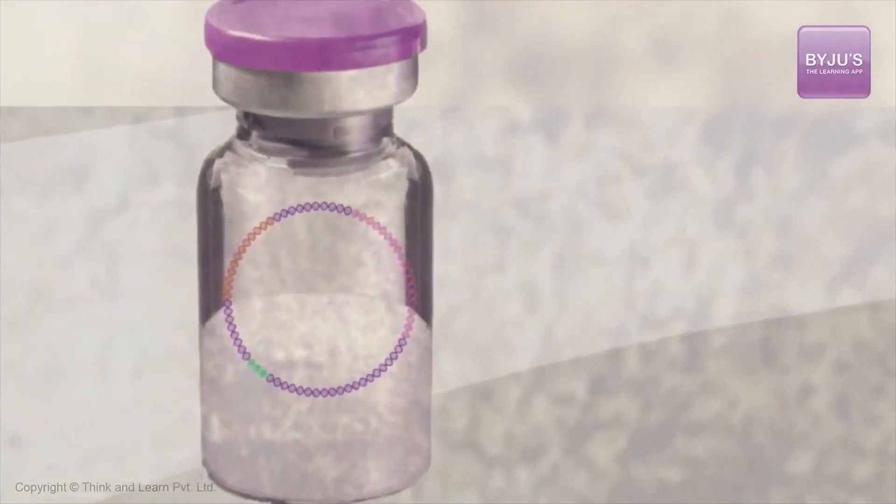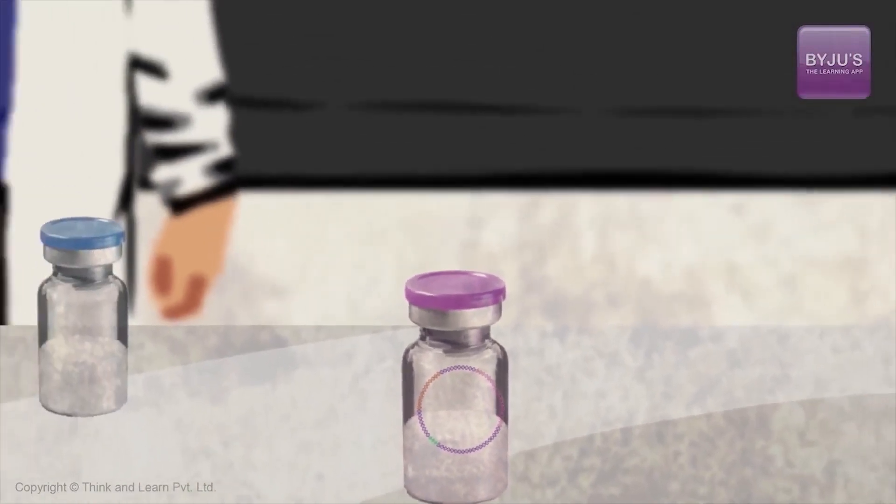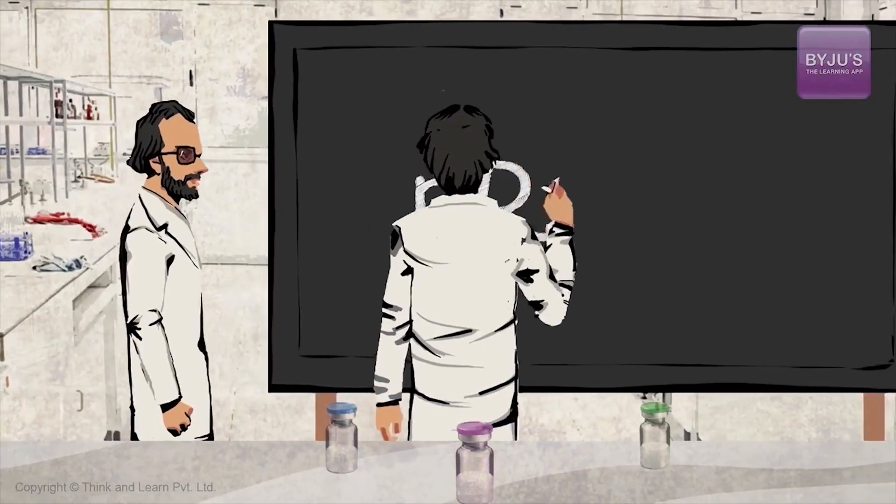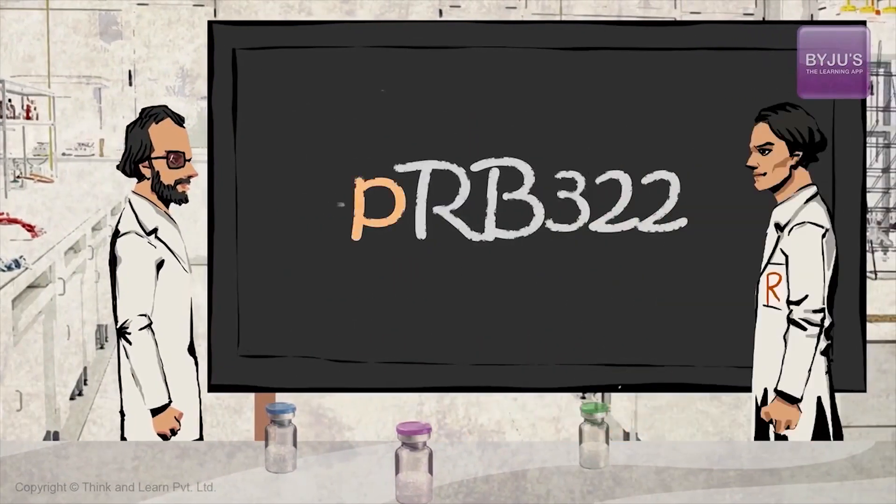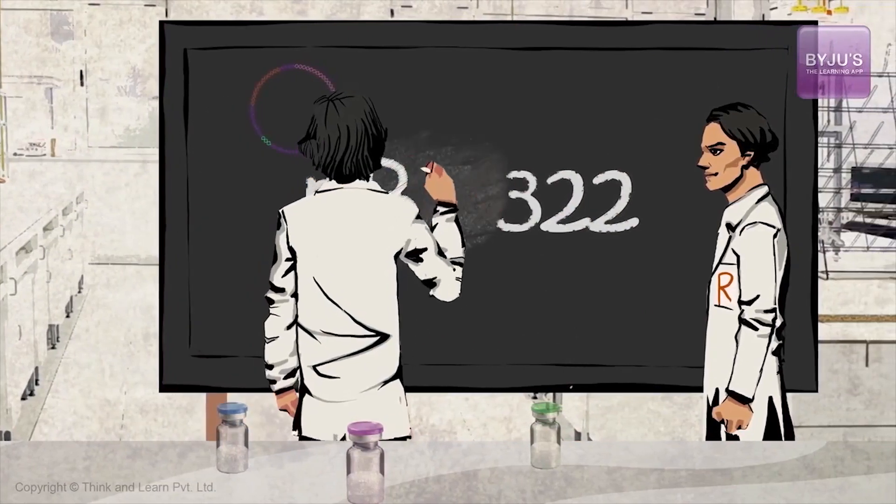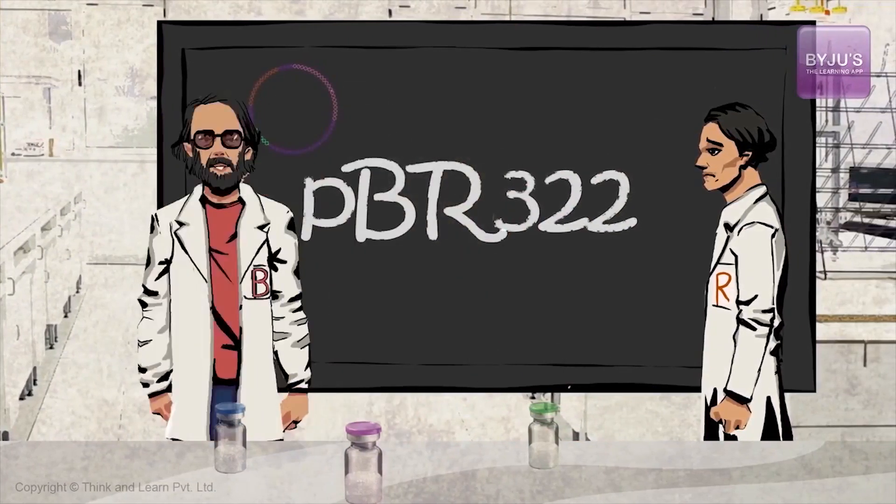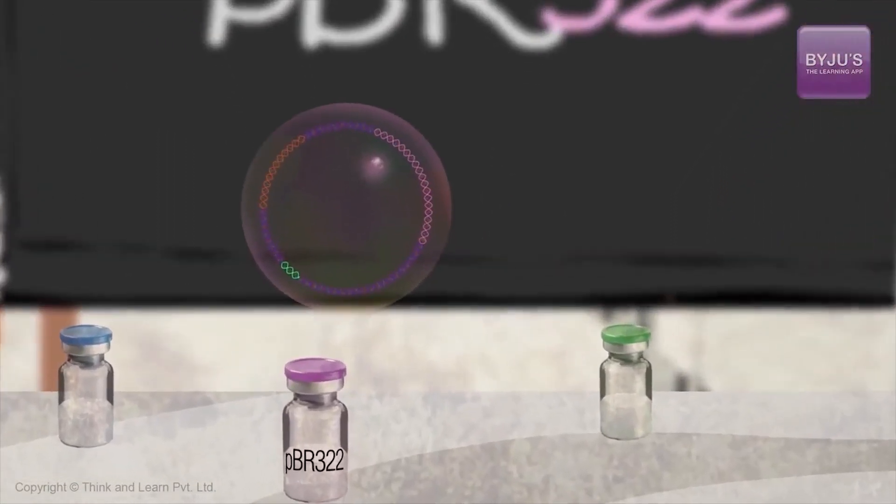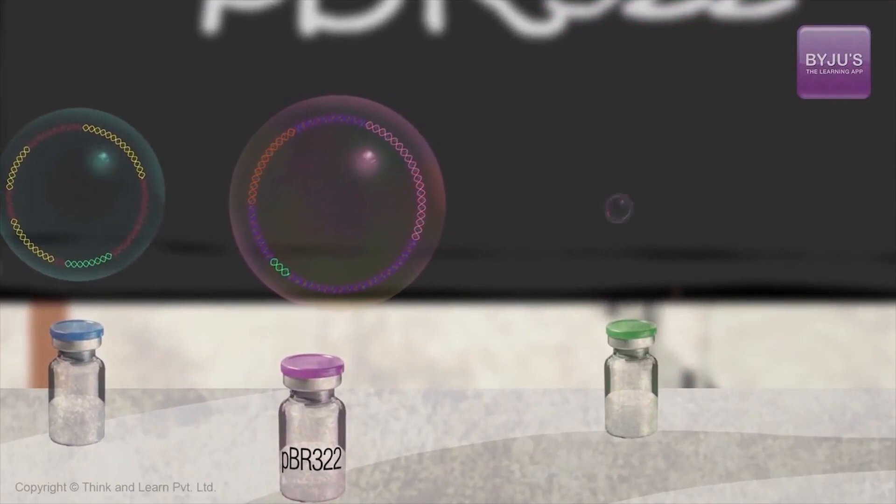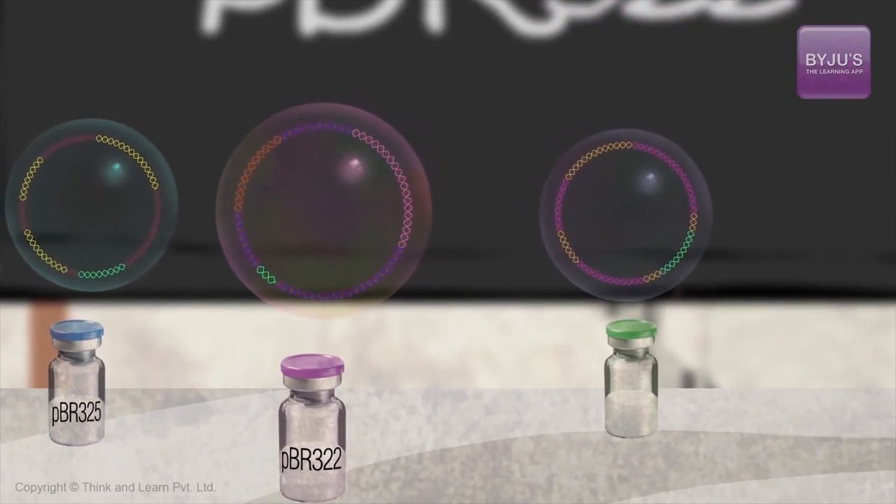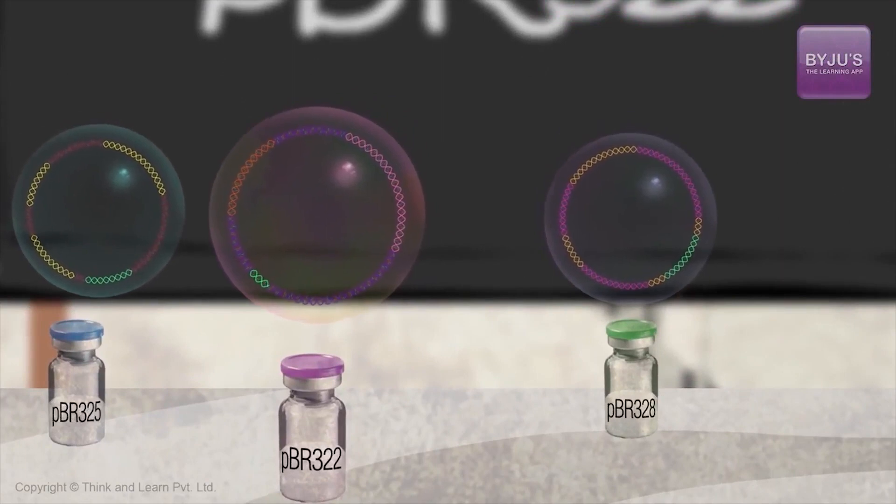This was the first artificial cloning vector developed in 1977 by Bolivar and Rodriguez, hence the name PBR322. P refers to the fact that it is a plasmid, B for Bolivar, and R for Rodriguez. The numeral 322 distinguishes this plasmid from other plasmids developed in the same laboratory. For example, there are plasmids like PBR325, PBR328, etc.